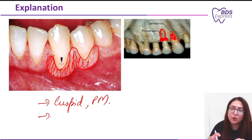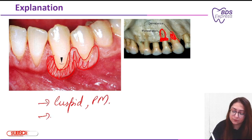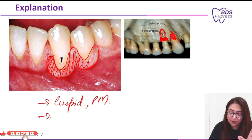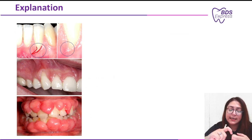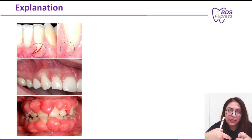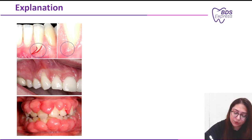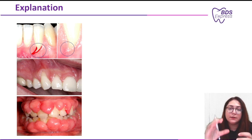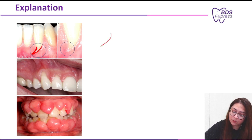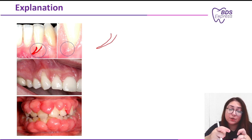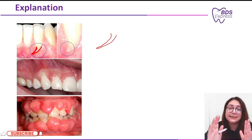A rolled or drapery kind of gingiva will be seen, normal with the aging process. The other option given was Stillman's cleft. It looks as if the gingiva has been denuded by nails — a nail-like denudation of the gingiva. This is Stillman's cleft, not McCall's festoon.